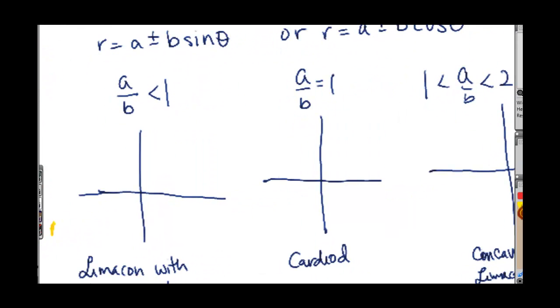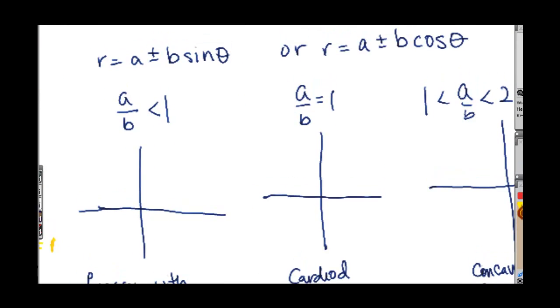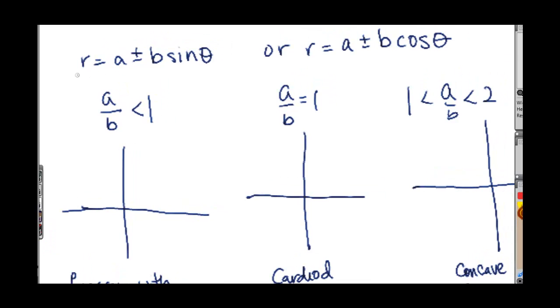Then there's a series of curves that are based off of these equations here. Either that or that. And if we look at the ratio of a over b, excluding the plus or minuses, just the pure numbers a and b, then you can start getting general ideas of what to do.